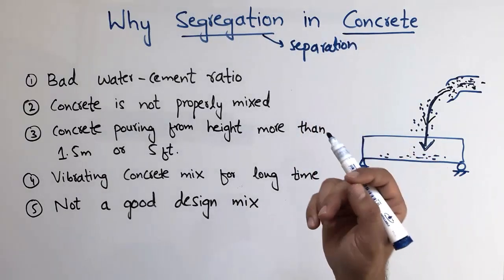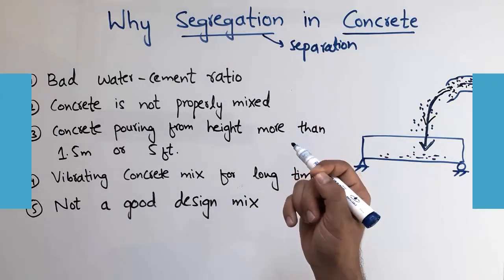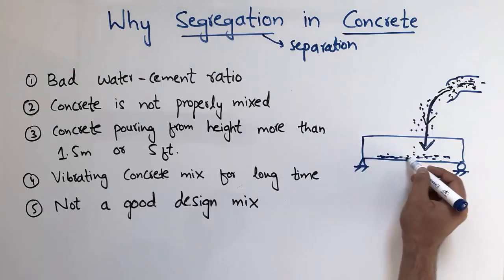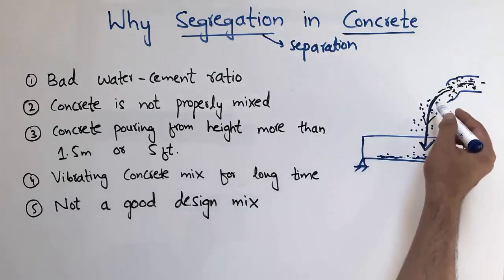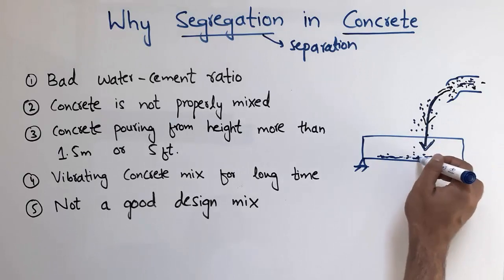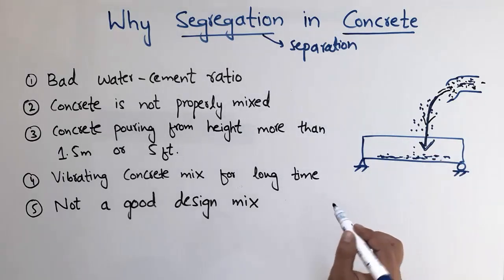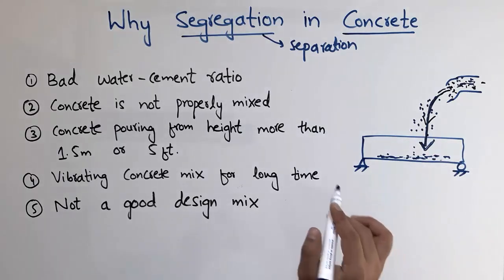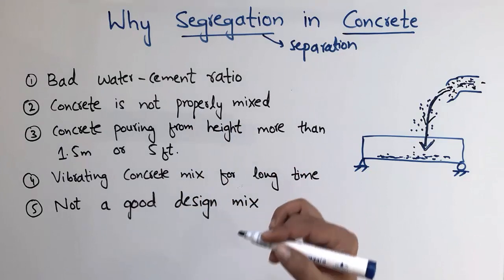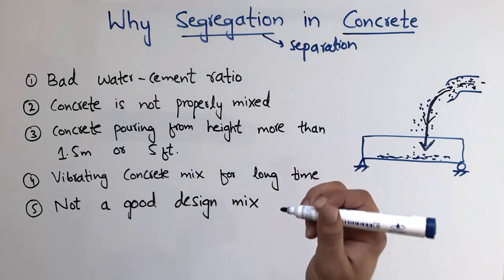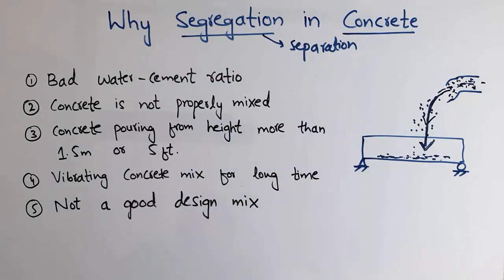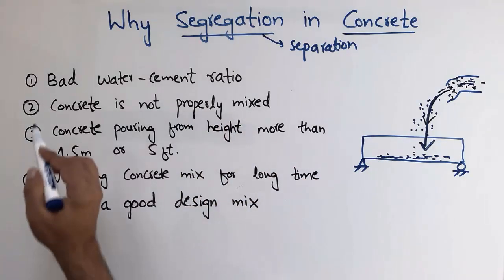Segregation occurs because the coarse aggregate has a higher weight and moves first into the beam, while the other components come down after the coarse aggregate. This phenomenon is known as segregation, and there are some factors that cause it. I'm going to explain them one by one.